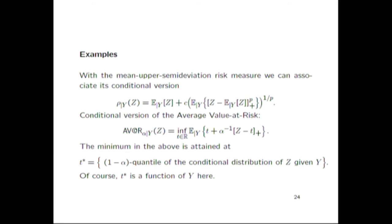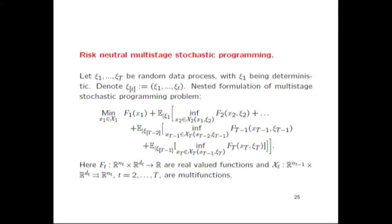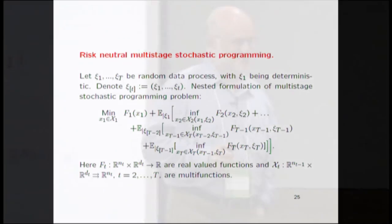Average value-at-risk doesn't have this decomposition property, which makes the dynamic analysis very different from the static one or the risk-neutral one. In dynamics, there are many cases of decisions made in stages. You have some random process — this is the corresponding uncertainty — and you make decisions at certain periods of time, based on what you have observed so far. We know the past, or at least we're supposed to know the past. We don't know the future. We assume certain distribution of the process — we have a random process, and data coming in stages, and we assume a certain type of probability distribution.